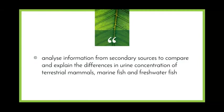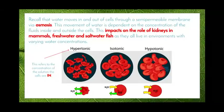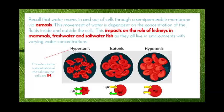We'll start by looking at the dot point asking us to compare and explain the differences in urine concentration in terrestrial mammals, marine fish and freshwater fish. Before we move on, we should recall that water moves in and out of cells through a semi-permeable membrane through the process of osmosis. This movement of water is dependent on the concentration of fluid inside and outside of the cells, which impacts on the role of kidneys in mammals, freshwater and saltwater fish as they all live in environments with varying water concentrations.